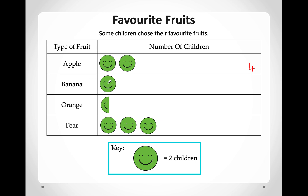Looking at bananas: 1, 2 smiley faces — that means two children like bananas. How many children like oranges? They are showing us half a smiley face — half of two is one, so only one person likes oranges. And how many children like pears? 1, 2, 3, 4, 5, 6 — six children like pears.